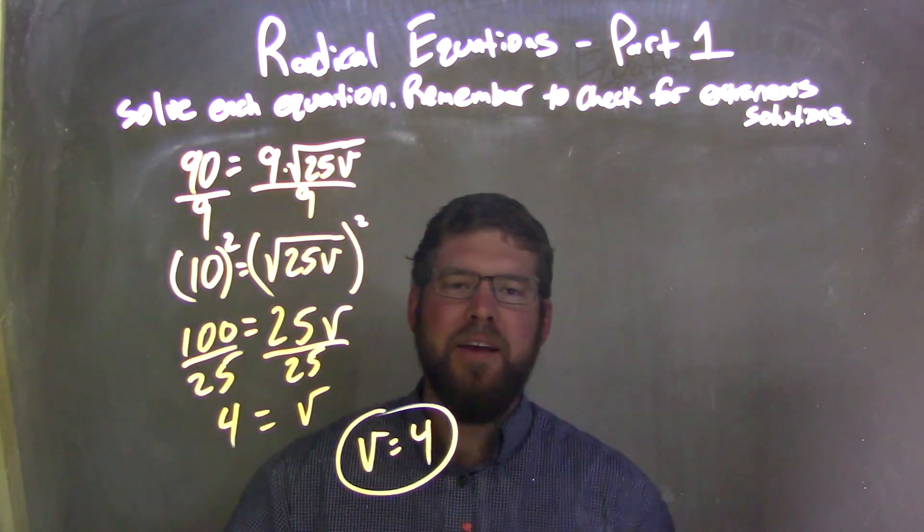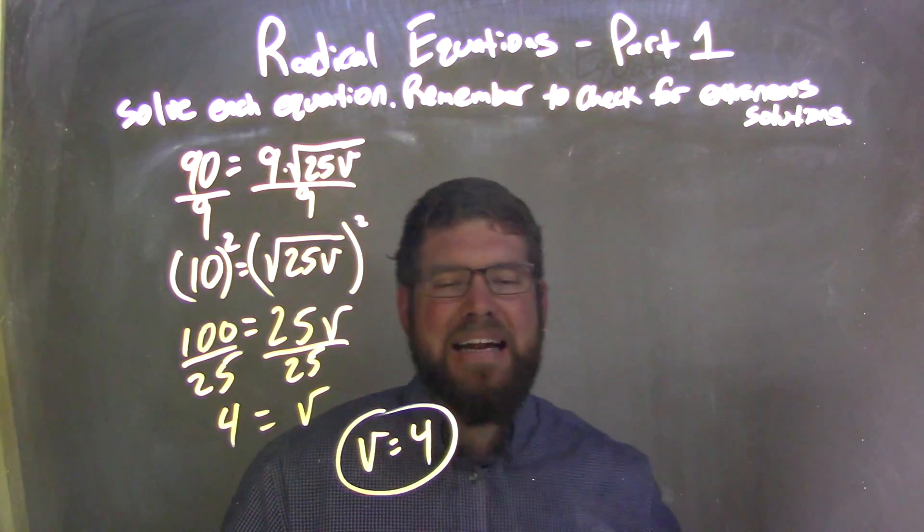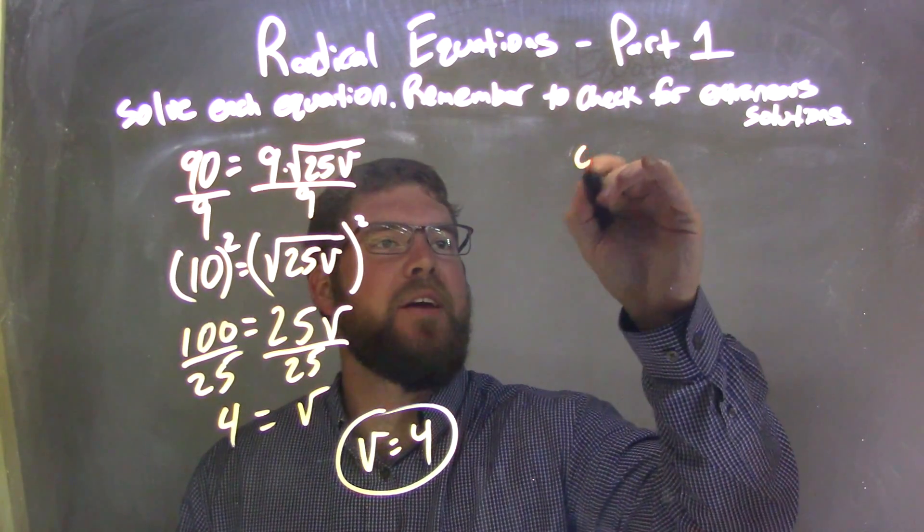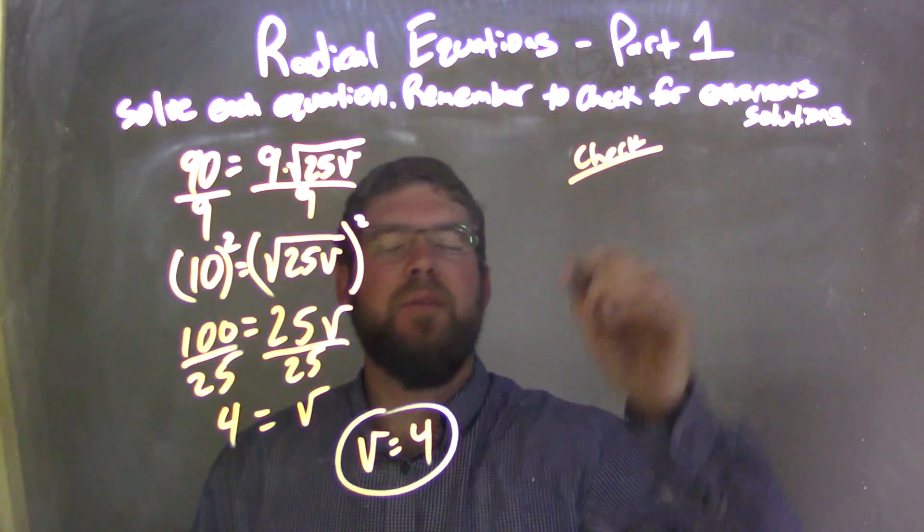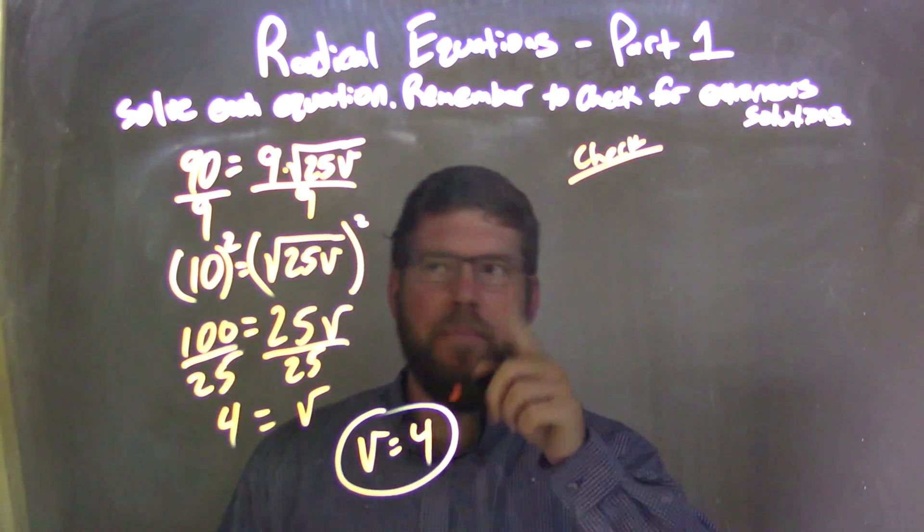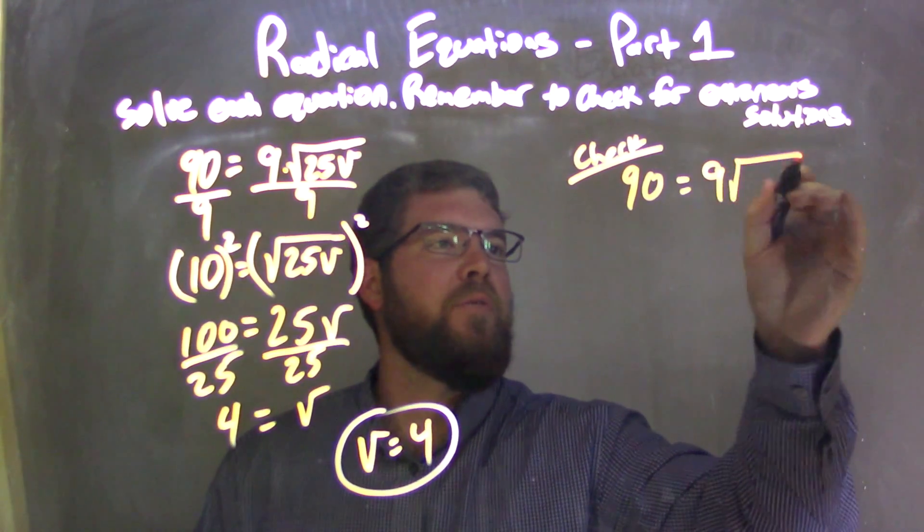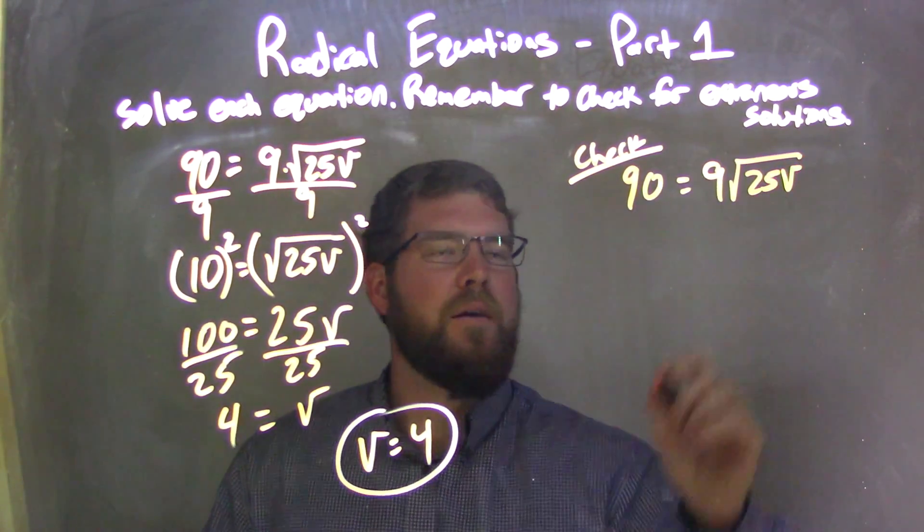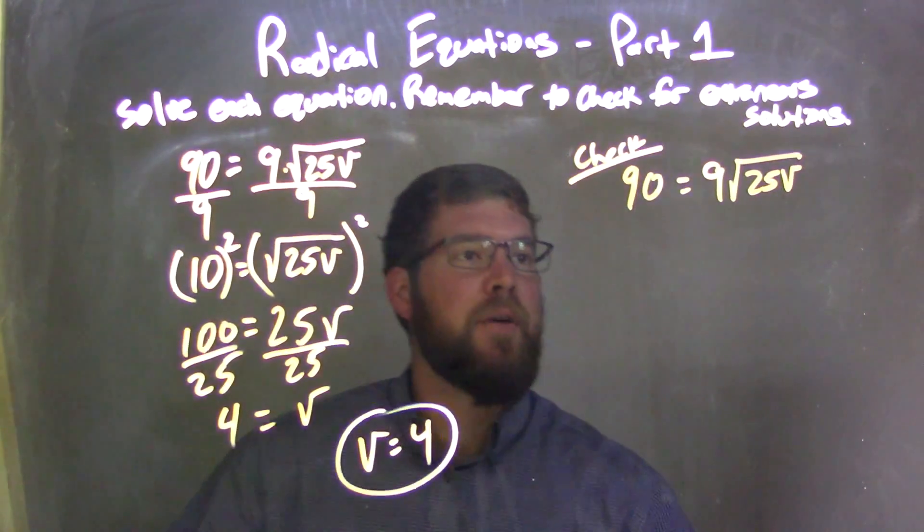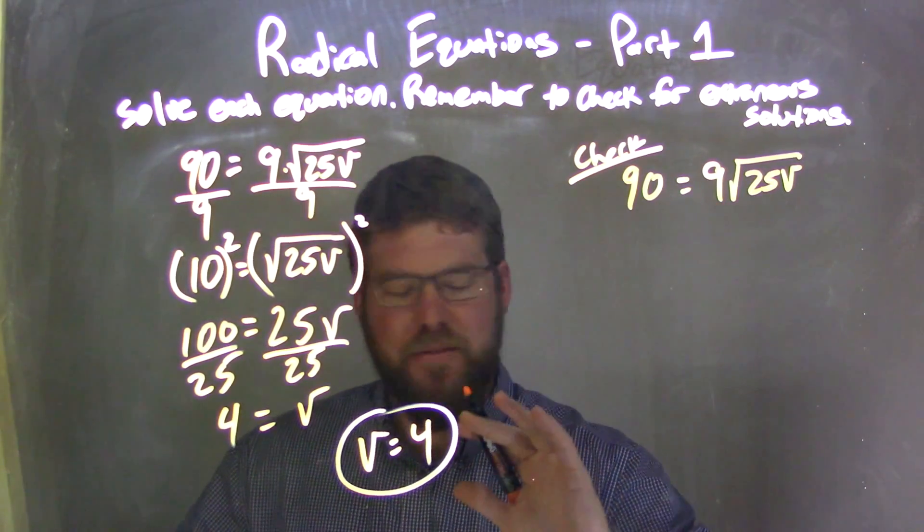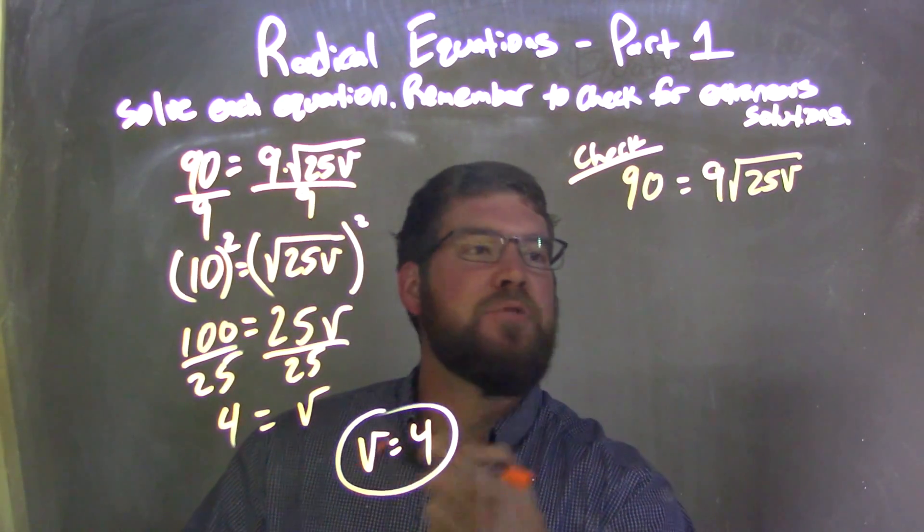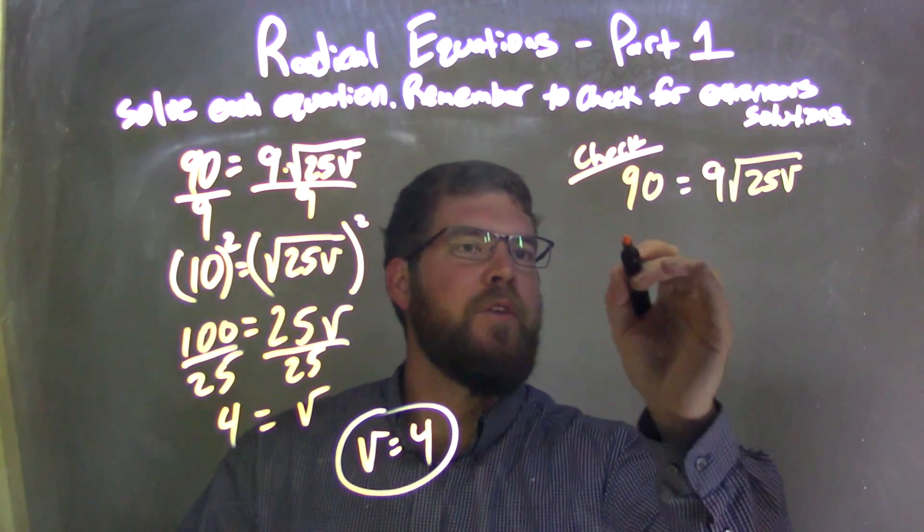So far, I believe that is my answer, but I need to check my work. This is an important step. Don't skip it. Don't be lazy. 90 equals 9 square root of 25V. Let me simplify. Oh, I'm not solving, I'm checking. Got ahead of myself. I'm going to plug 4 in for V.